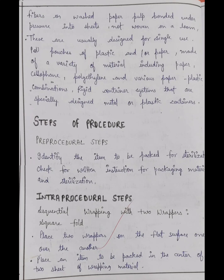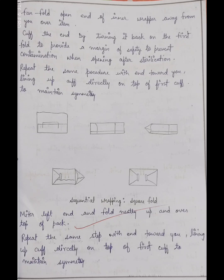For intra-procedure steps, the first method is sequential wrapping. Place two wrappings on a flat surface, one over the other. You can fan-fold open the inner wrapping. Fold it so that it will not contaminate the contents. Place two sheets with your instrument in the center, then fold it so as to prevent contamination after sterilization.